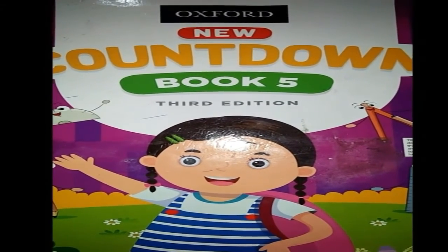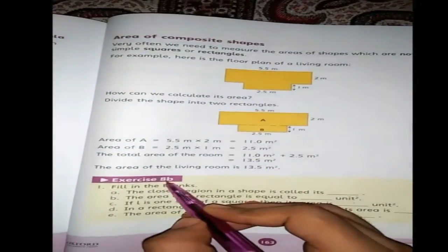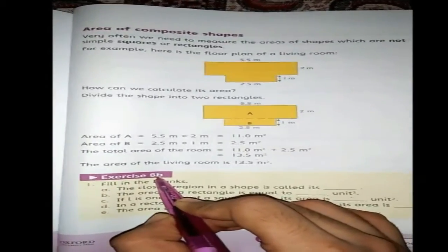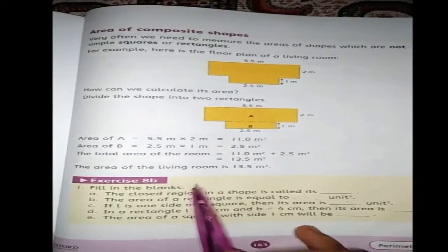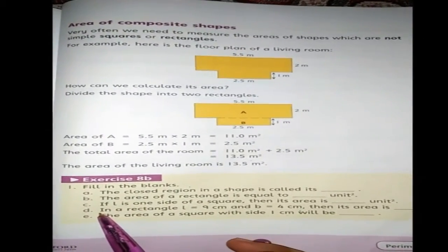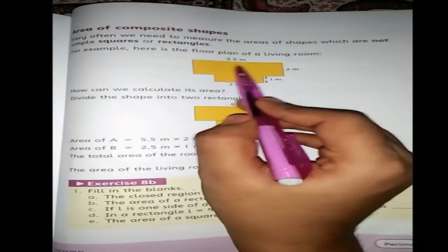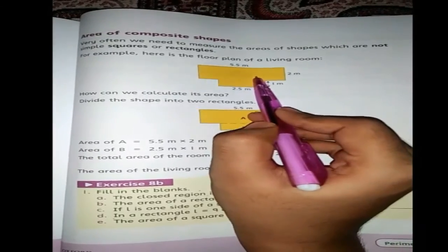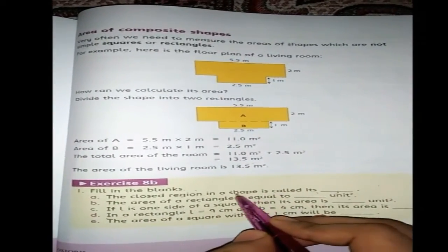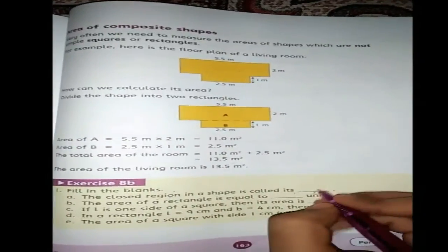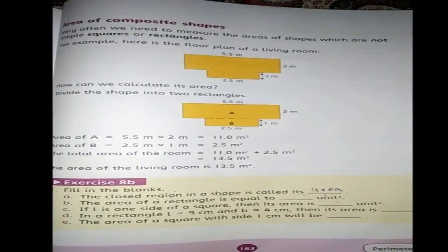It's time for book work. Open your book to page number 163. Just like we have already studied, we have started Exercise number 8B in which we studied about area of rectangle. Now we are going to solve question number 1, the fill-in-the-blanks. The first statement: the closed region in a shape is called its — the answer is area.